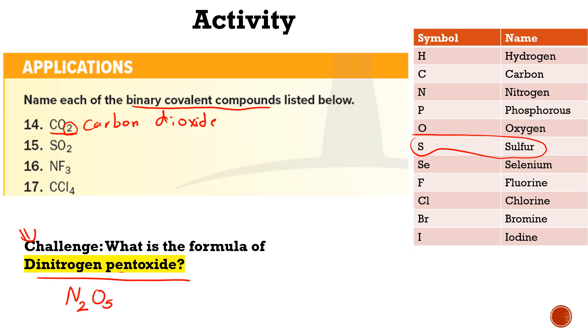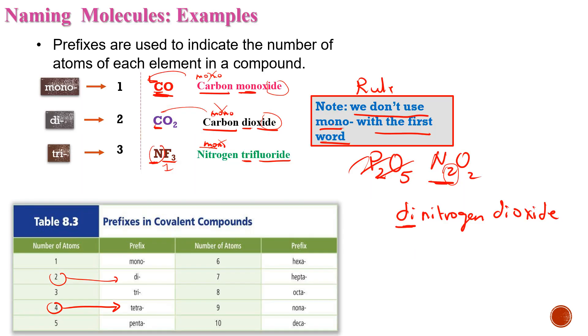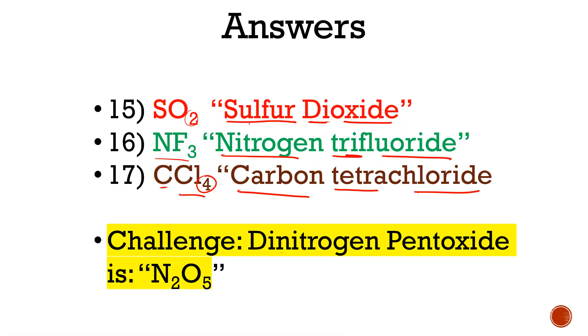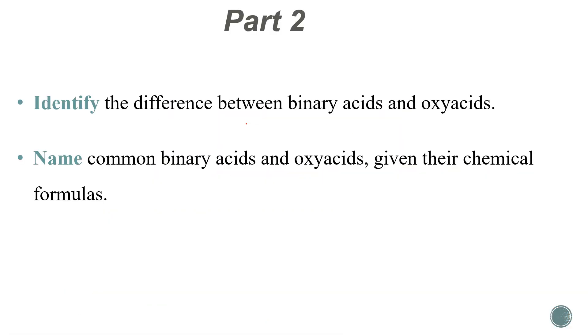The most important things to memorize are the prefixes and the -IDE endings. And we don't put 'mono' for the first word. That's the end of Part 1 — very easy.